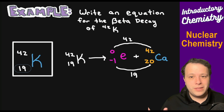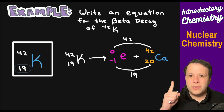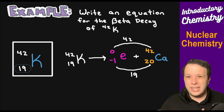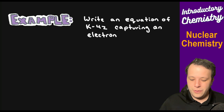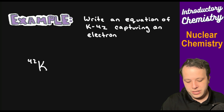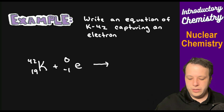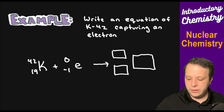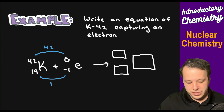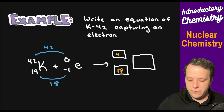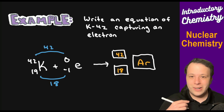Can beta decay only happen this way? With any of these processes, they can either be fission — breaking apart — or fusion, which is coming together. We've been showing decay, which is fission. Fusion is when we bring them together, so you could show the opposite: capturing an electron. If we take K-42 with atomic number 19 and capture a beta particle, the total on the left has to equal the right — we have 42 and 18. Looking up atomic number 18 on the periodic table, you'll quickly see that is argon.